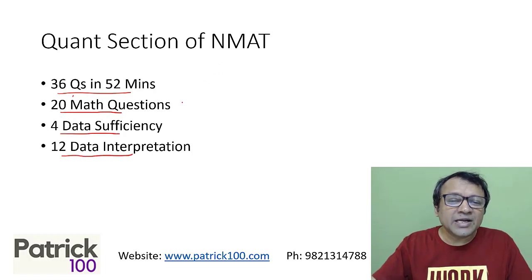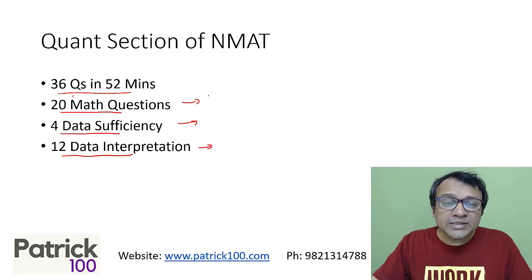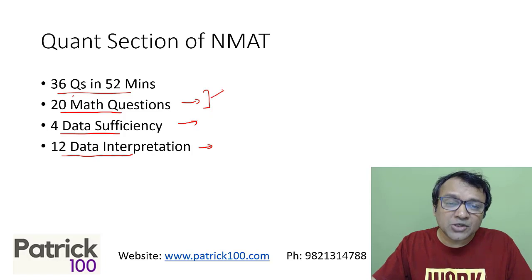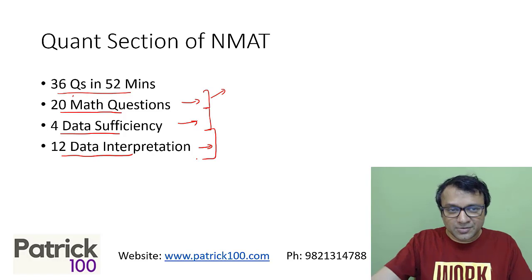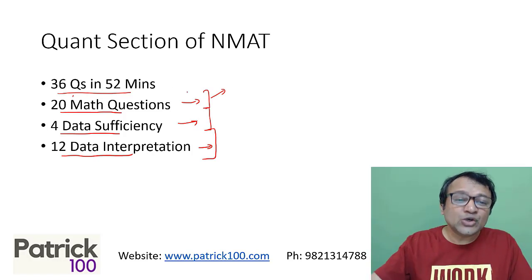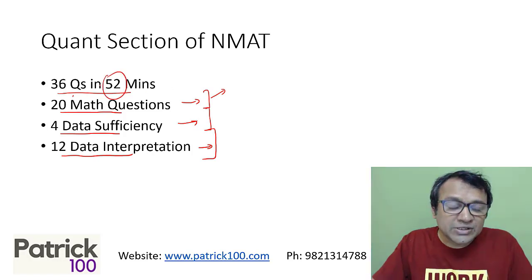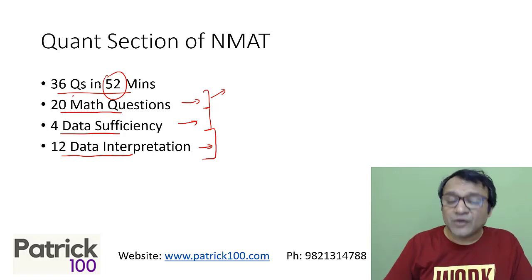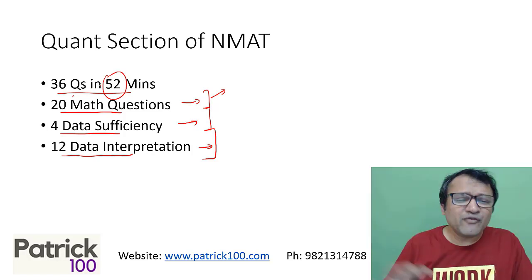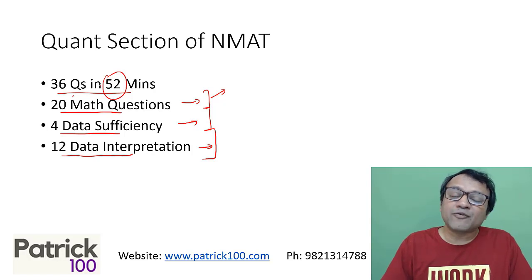You need to know the average time you take per section — how much time per math question, how much for DAS questions, and how much for DI questions. Ensure they all add up to less than 52 minutes, which is your total time. It can be less than 50 or 51 minutes, so you have a fair idea of how much time you take per type of question.